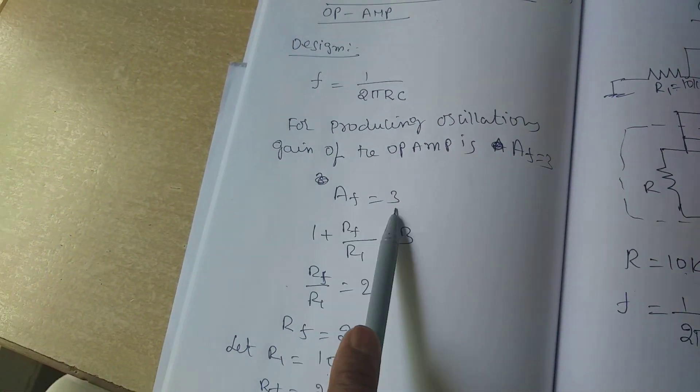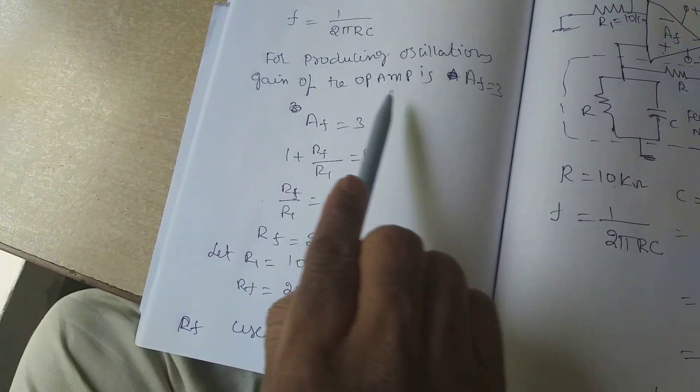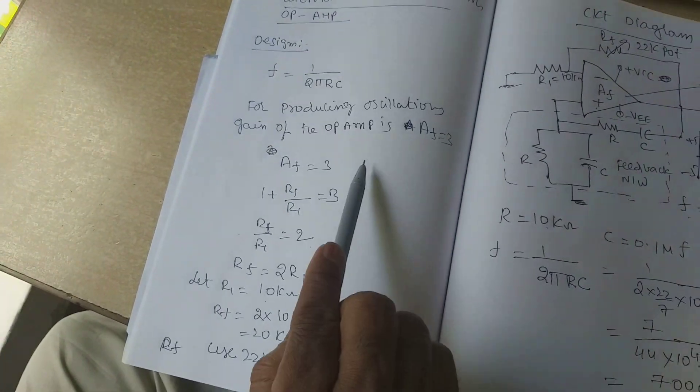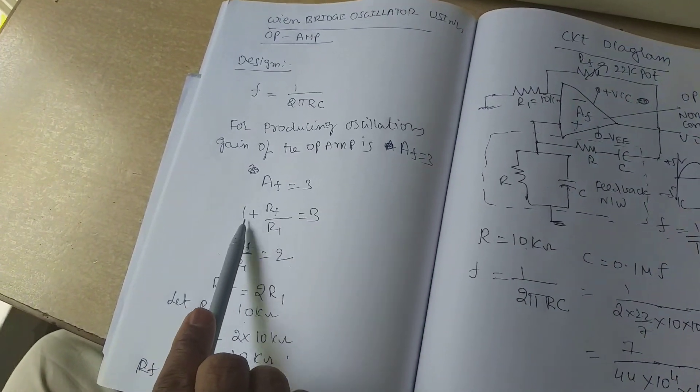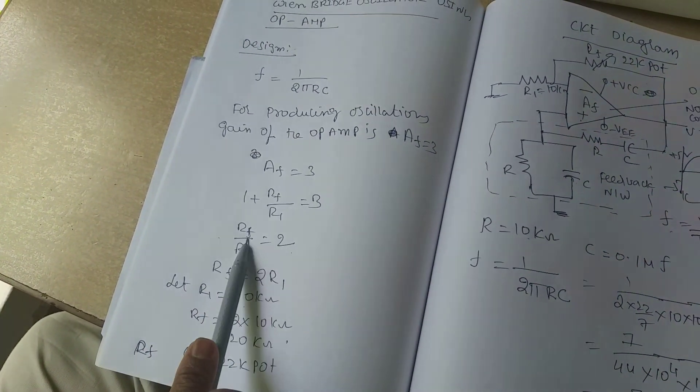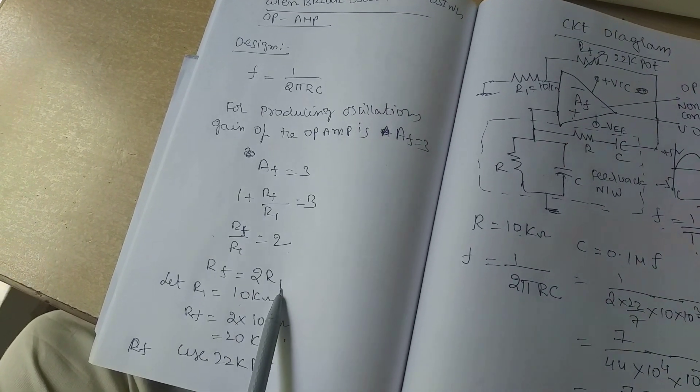Here AF is equal to 3. For producing oscillations, gain of the op-amp AF is equal to 3. AF is equal to 3 means 1 plus RF by R1 is equal to 3. RF by R1 is equal to 2. RF is equal to 2R1.